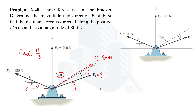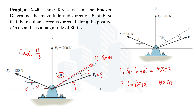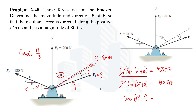We now have two equations: equation one, F1 sin(60° + theta) = 858.97, and equation two, F1 cos(60° + theta) = 130.769. Dividing equation one by equation two, F1 cancels. Since sine over cosine equals tangent, tan(60° + theta) = 6.56. Taking the inverse tangent, we get 81.34 degrees. Therefore theta equals 21.34 degrees. This is one of the answers.